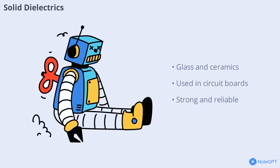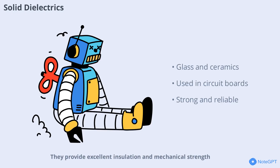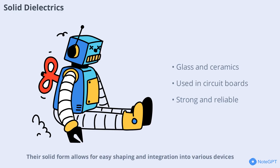Solid dielectrics such as glass, ceramics, and plastics are widely used in electrical engineering. They provide excellent insulation and mechanical strength, making them ideal for use in circuit boards, cables, and high-voltage equipment. Their solid form allows for easy shaping and integration into various devices, contributing to the reliability and safety of electrical systems.